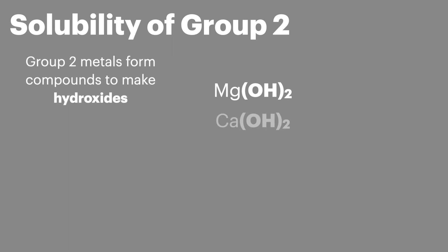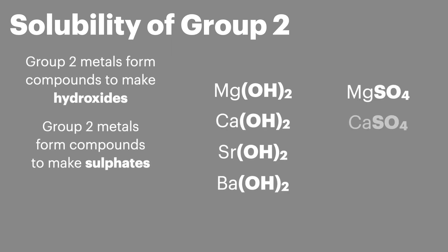To understand testing for sulfate ions, we first need to quickly look at the solubility of group 2 compounds. Group 2 metals can form many different compounds, but for A-level we're particularly interested in the compounds formed to make hydroxides and the compounds formed to make sulfates.